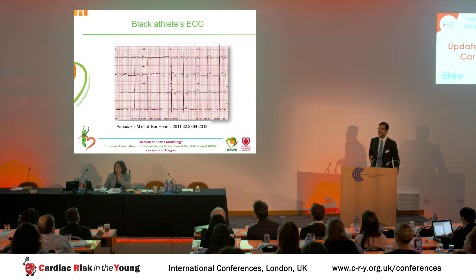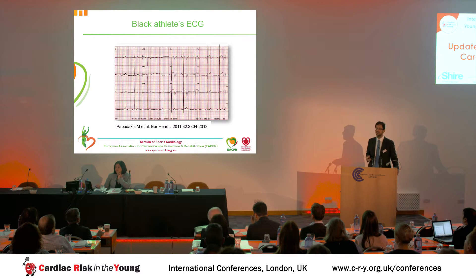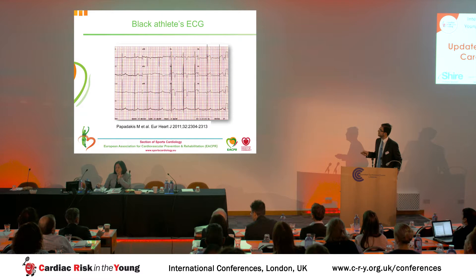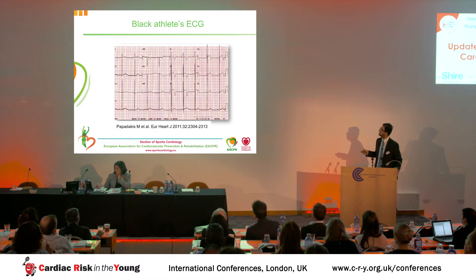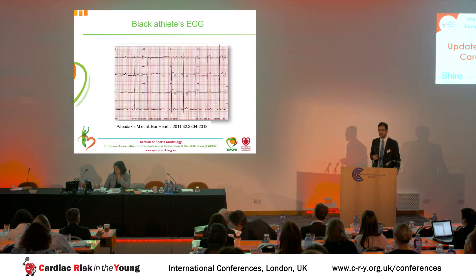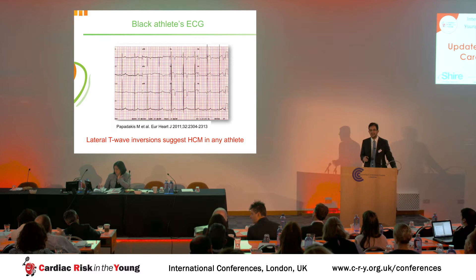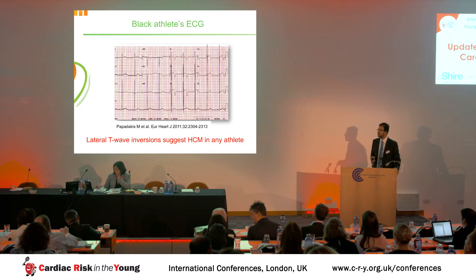Remember, black athletic individuals exhibit more hypertrophy but also more repolarization changes. The classic ECG of a black athletic individual shows deep T-wave inversions in the anterior leads — V1, V2, V3, V4 — and these are usually associated with J-point elevation as well as a convex ST-segment. But they do not extend into the inferior or lateral leads. Therefore, lateral T-wave inversion in any athletic individual should be viewed with caution.